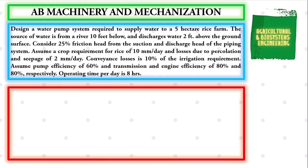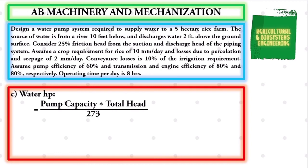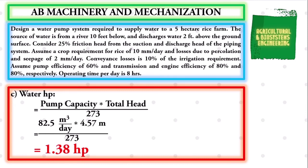The next value to solve is the water horsepower. Using the formula: Water HP = (pump capacity × total head) ÷ 273. Substituting: (82.5 m³/hr × 4.57 m) ÷ 273, giving us a final value for water horsepower of 1.38 horsepower.